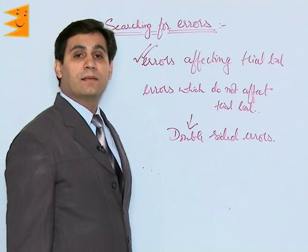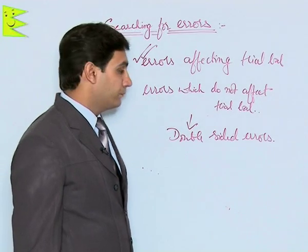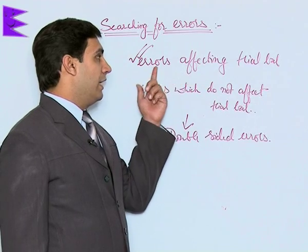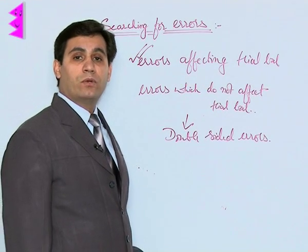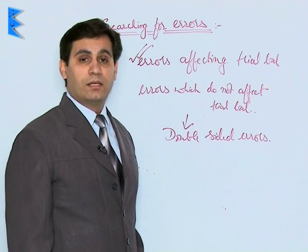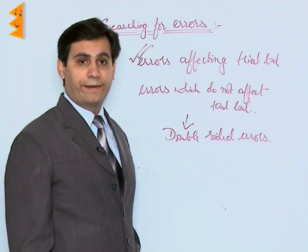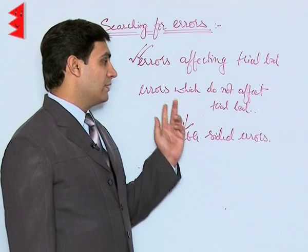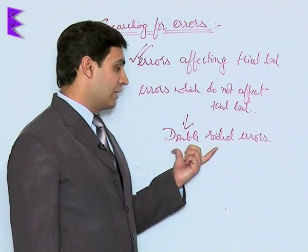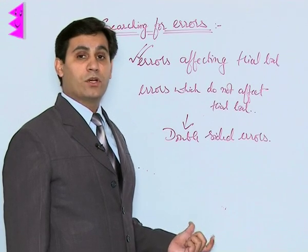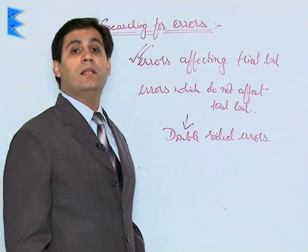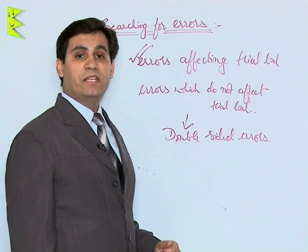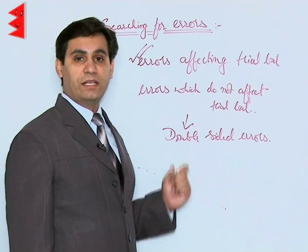It is very important to categorize errors into these two groups. Errors which affect the trial balance have only one aspect — either the debit or credit aspect is missing or incorrect — so it is not possible to pass a journal entry without creating a suspense account. Whereas errors which do not affect the trial balance, being double-sided errors, do not require a suspense account, because the mutual adjustment in the two accounts results in a correct entry. So it is very important to identify whether errors are affecting or not affecting the trial balance.